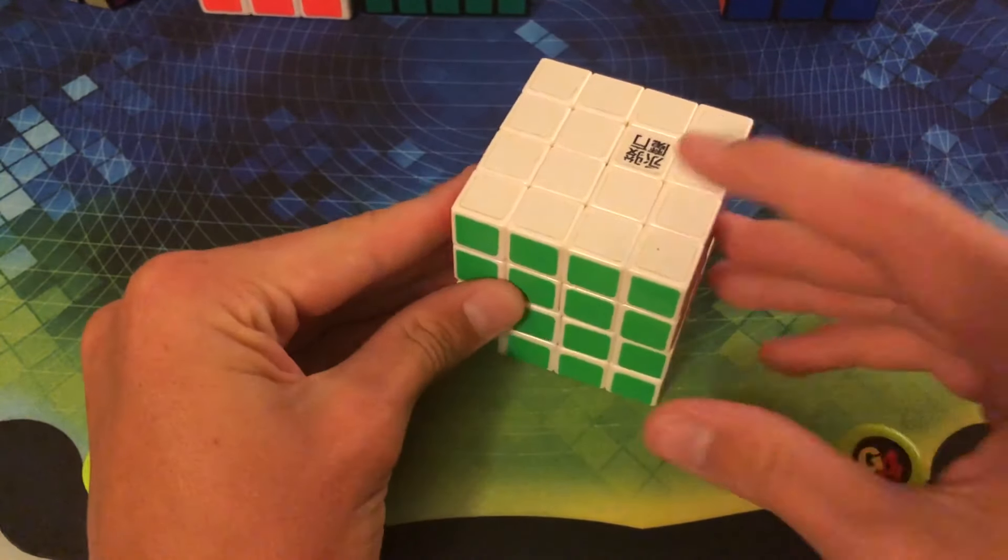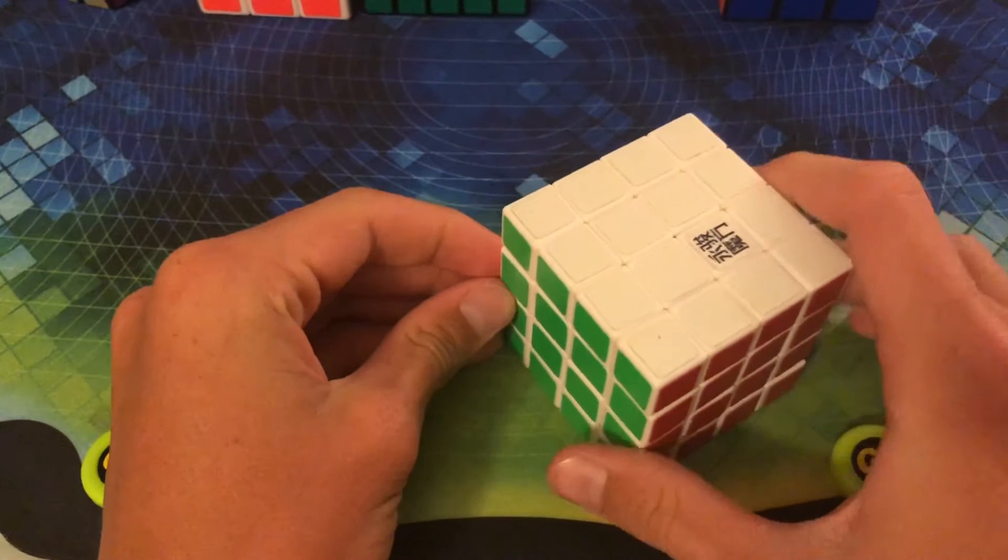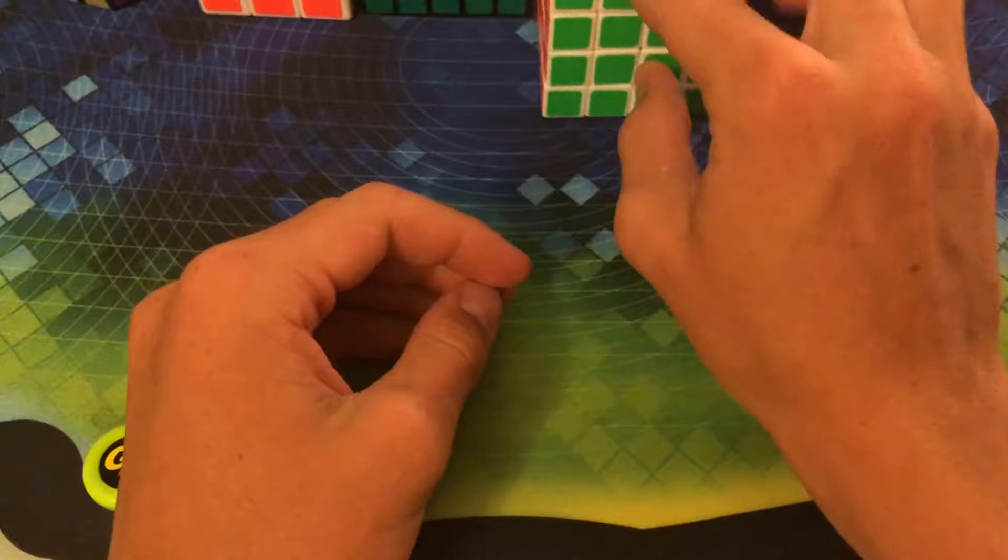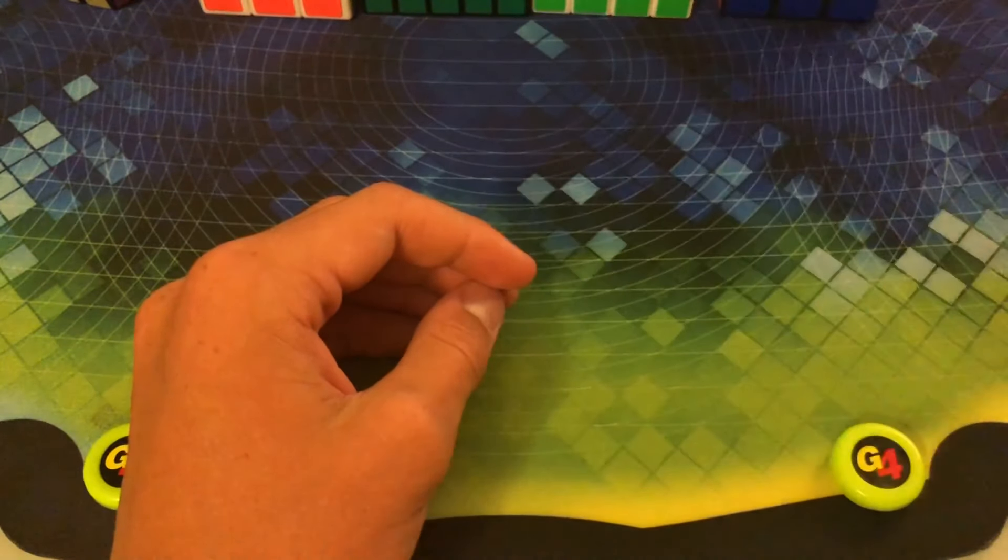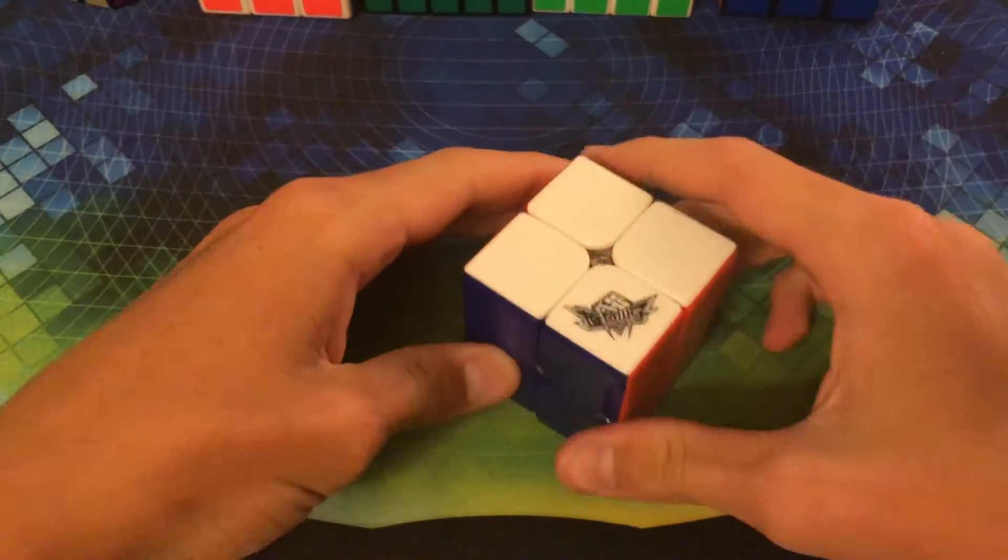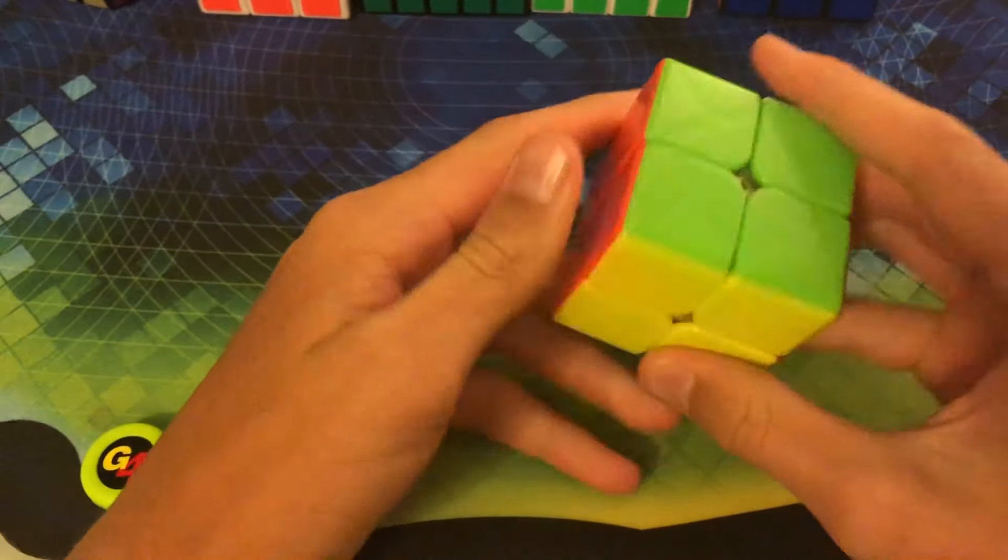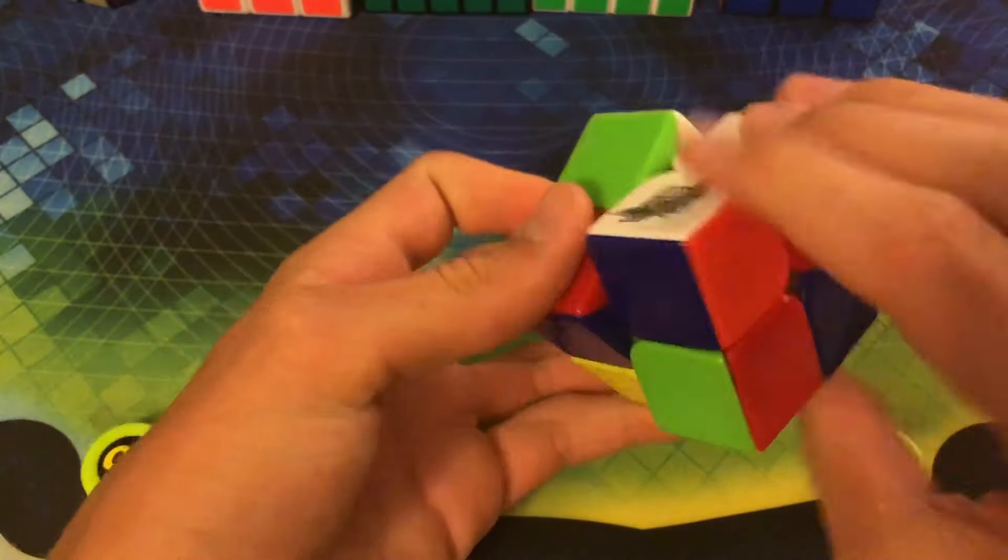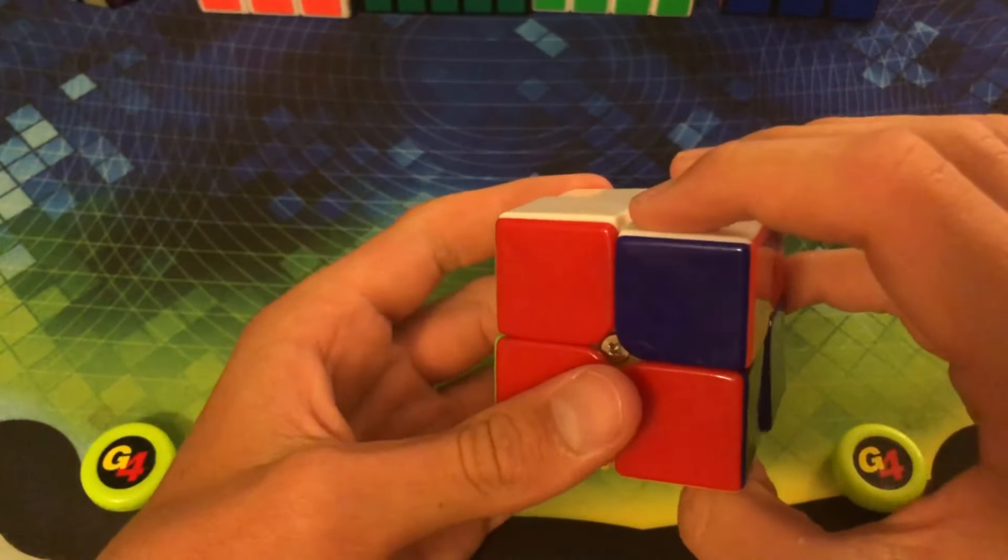Okay, now real quickly, before we get to the number 1 spot, I just want to do some honorable mentions. And they're not necessarily super old cubes, but they're more so just cubes that sort of got me into cubing. Our first honorable mention is the Cyclone Boys 2x2. All you need to know is it was my first 2x2 ever, and it turns absolutely terrible, and it's really loud.